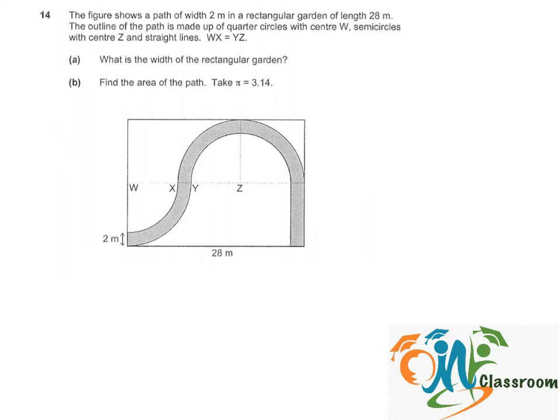As we can see, WX is the radius of this quarter circle, so we'll just label it R. And it's equal to YZ, right? So this will also be R, and this is also the radius of the quarter circle, R.